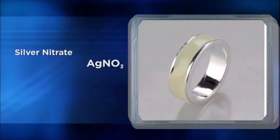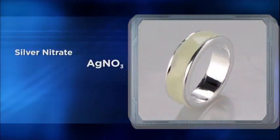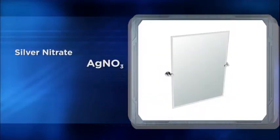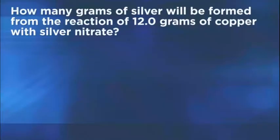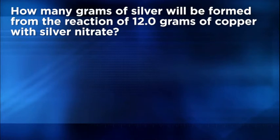Here's an example of a mass-to-mass problem. Silver nitrate can be used in electroplating jewelry or in the manufacture of high-quality silver mirrors. How many grams of silver will be formed from the reaction of 12.0 grams of copper with silver nitrate according to this reaction?